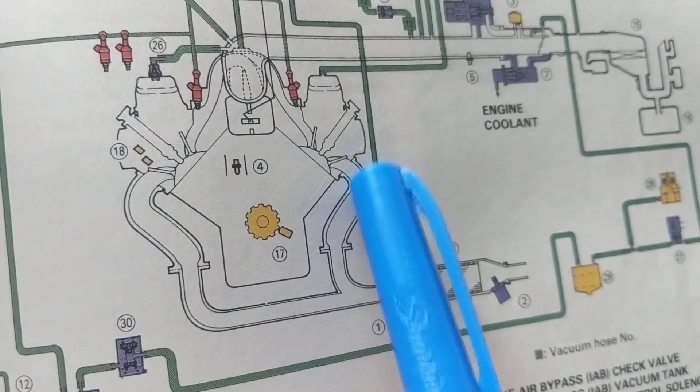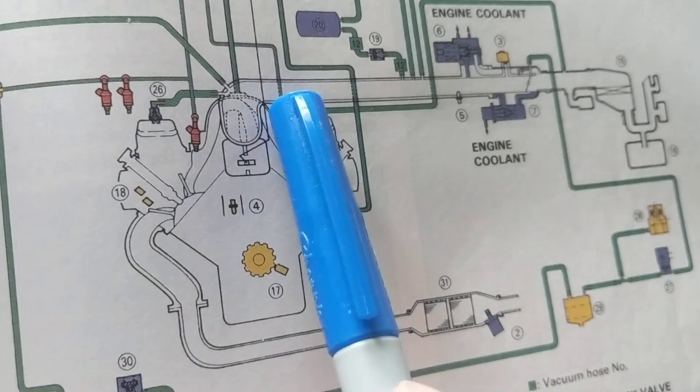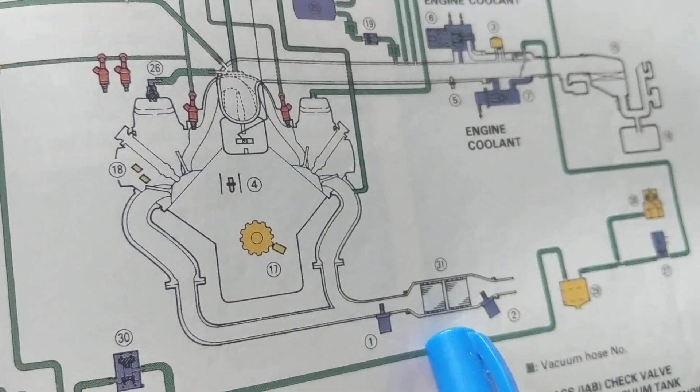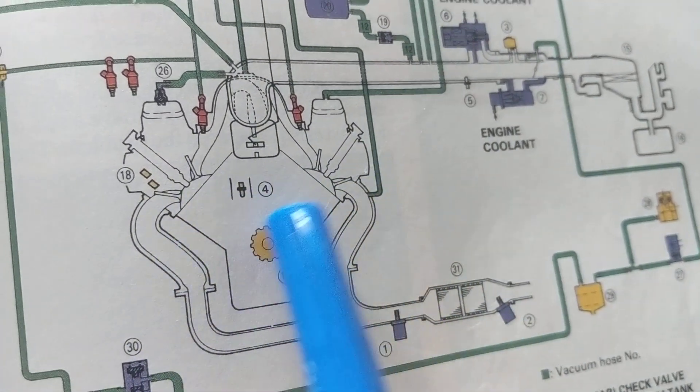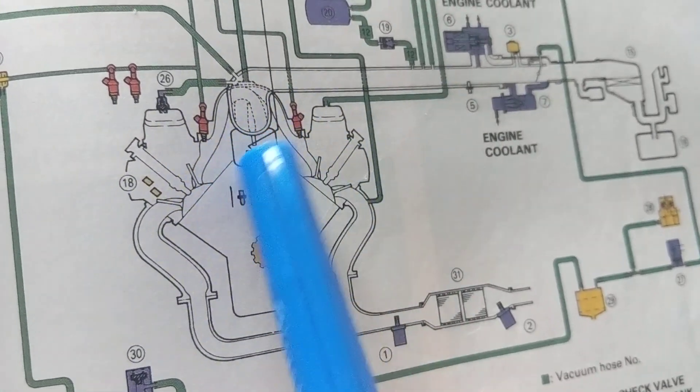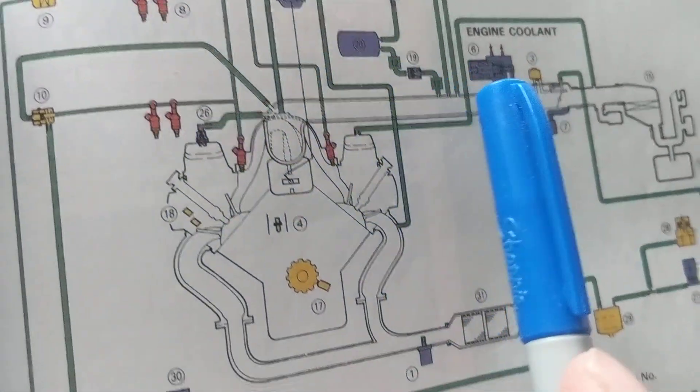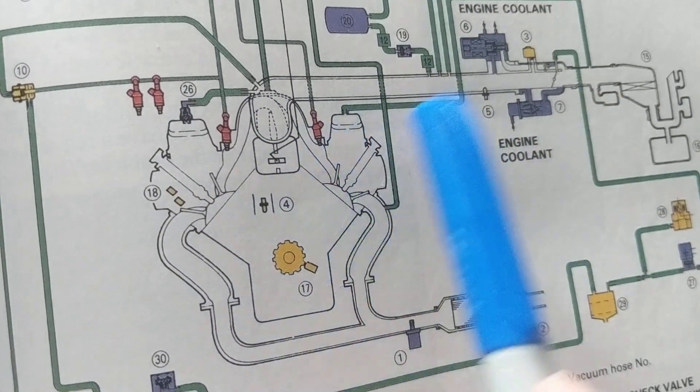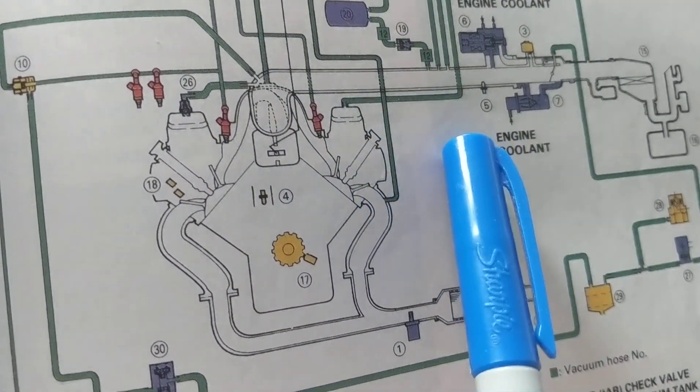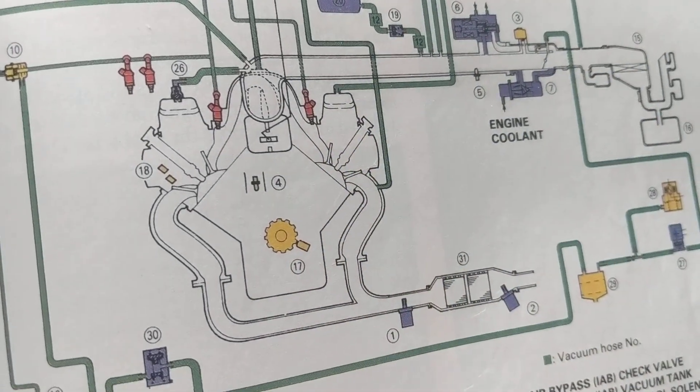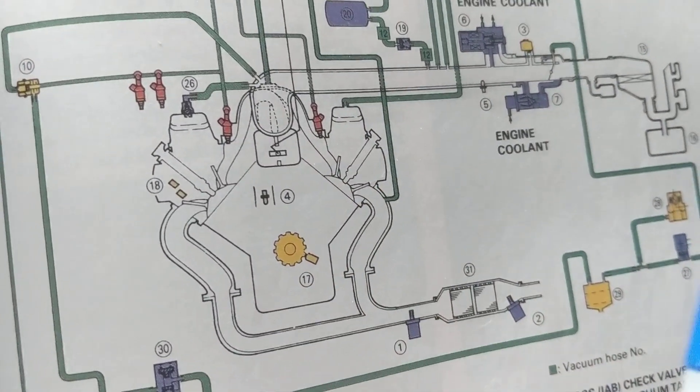So where are we going to put it? We're going to put it in the output. This I call the input, this is the output. Whatever comes out tells us how good this engine performed. More air, more fuel, less air, less fuel. We want to make sure that it's in that ratio, 14.7 to one.